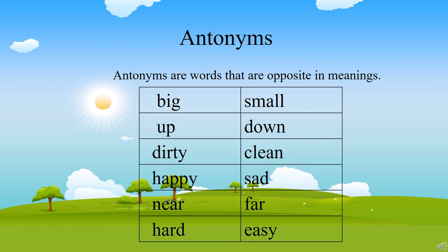Antonyms are words that are opposite in meanings. Examples: big, small. Up, down. Dirty, clean. Happy, sad. Near, far. Hard, easy.